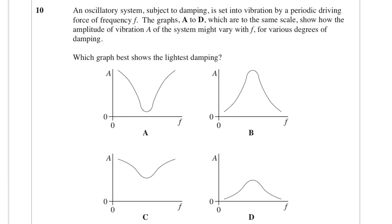An oscillatory system subject to damping is set into vibration by a periodic driving force frequency f. The graphs A to D show how the amplitude of the vibration of the system might vary with f for various degrees of damping. Which graph best shows the lightest damping? We're looking for the one that shows resonance but with the largest possible amplitude. So we're looking for the one of these two with the biggest amplitude, so it's option B.